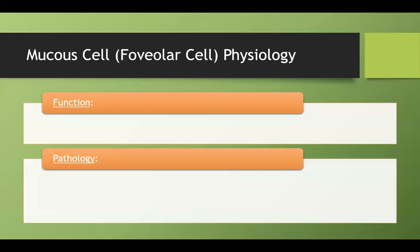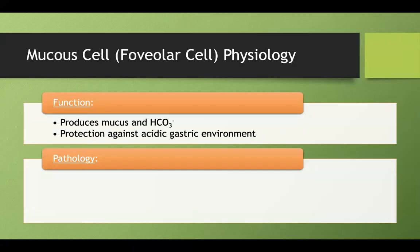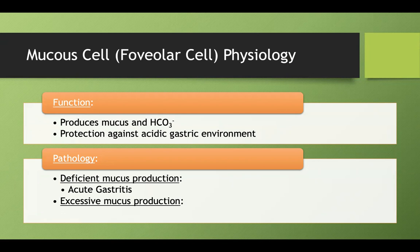Moving into physiology — mucus cells are quite basic: they produce mucus and bicarb, which protects against the acidic environment. What we'll talk about later is that deficient mucus production can lead to acute gastritis, and on the other hand, too much mucus production can lead to a disease called Menetrier's disease.